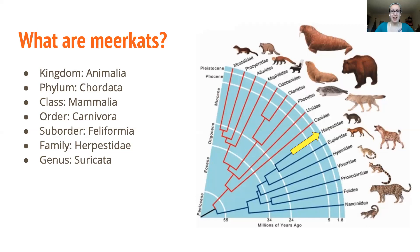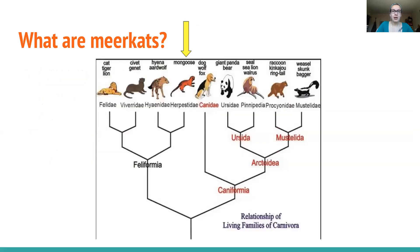The other interesting thing about meerkats is that they're in the suborder Feliformia. Feli might sound familiar because it sounds like cats — and they actually are kind of related to cats. Their family is Herpestidae, which includes interesting things like mongooses. You can see here the branch meerkats are coming off of is Herpestidae, and it's actually really close to Canidae, which is the canines we talked about in a previous lesson. Another close relative in the Feliformia subfamily are the Felidae, which includes house cats and big cats like lions and tigers.